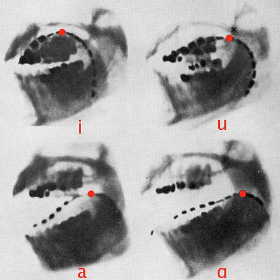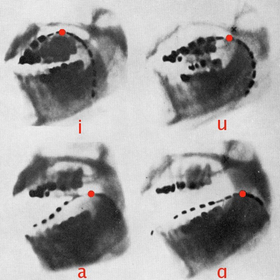For example, the sound of the English letter T may be transcribed in IPA with a single letter, T, or with a letter plus diacritics, T, depending on how precise one wishes to be.